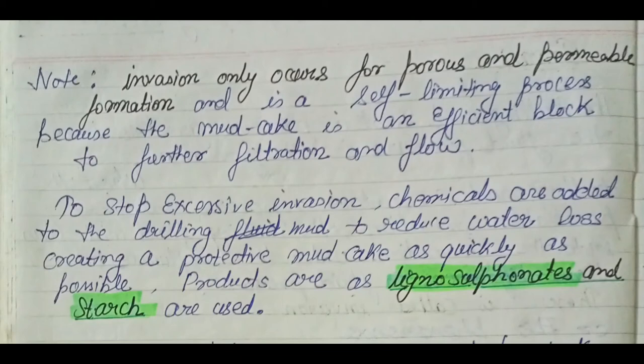To stop excessive invasion, chemicals are added to the drilling fluid to reduce water losses. These chemicals create a protective mud cake as quickly as possible. The products used are lignosulphonate and starch, which are used to further stop water losses and basically to stop excessive invasion.